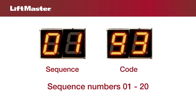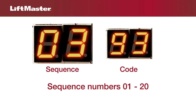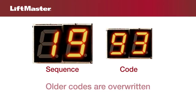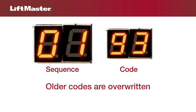The first part of the code is the sequence number. The operator is able to keep track of 20 diagnostic codes. The first code will display 01 for the sequence number, the second code 02, and so on. If more than 20 codes occur, the oldest codes will be overwritten.